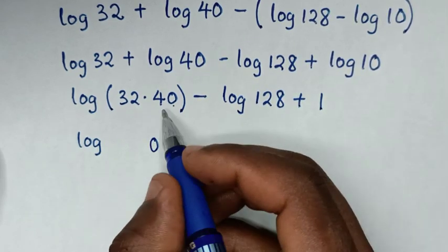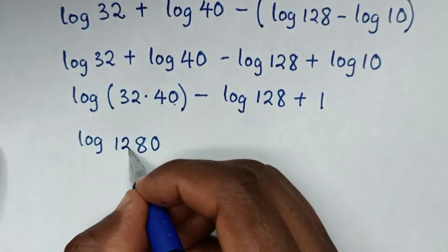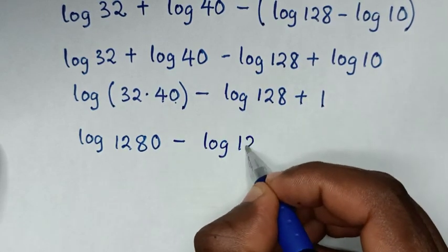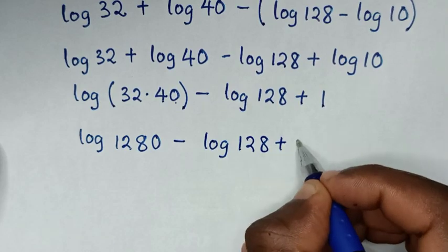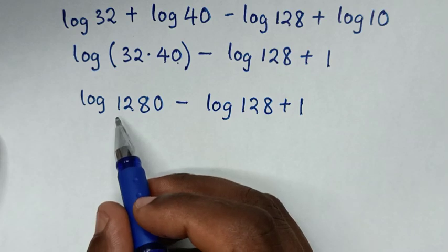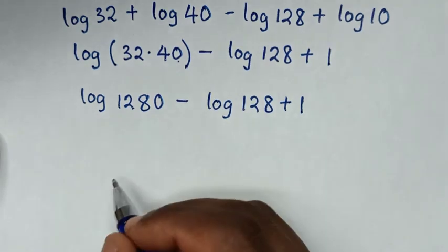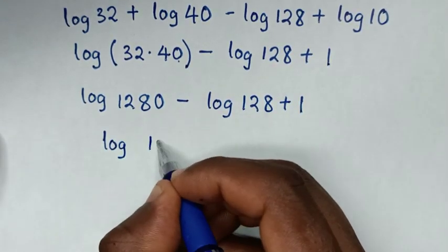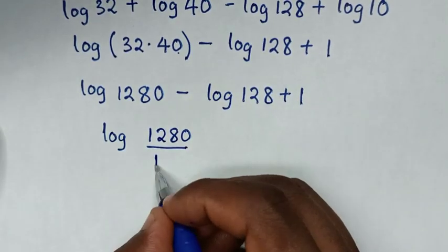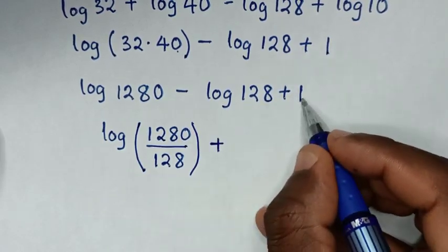So 32 times 40: 4 times 2 is 8, 4 times 3 is 12 — giving 1280. So it will be log of 1280 minus log of 128, then plus 1. Log of 1280 minus log of 128 is the same as log of 1280 over 128, then plus 1.